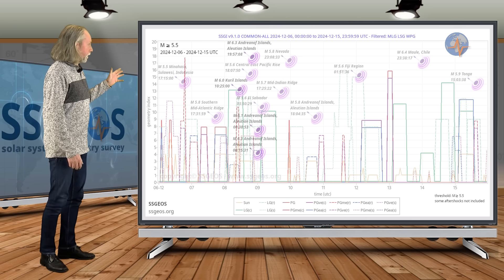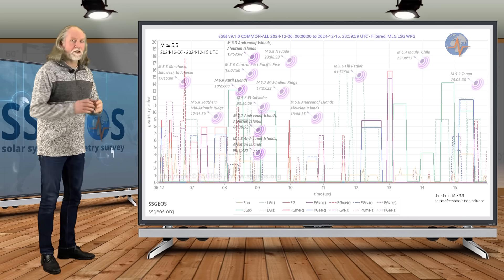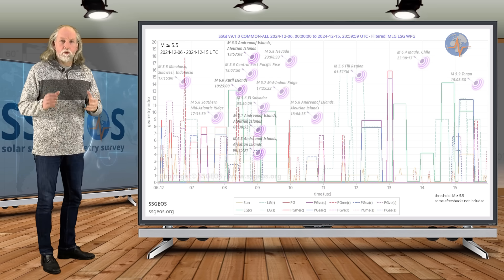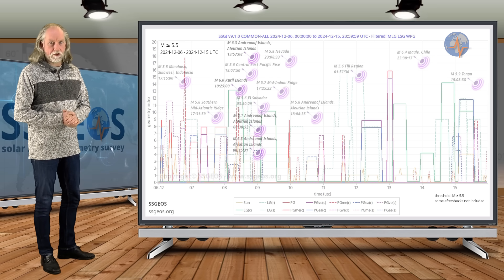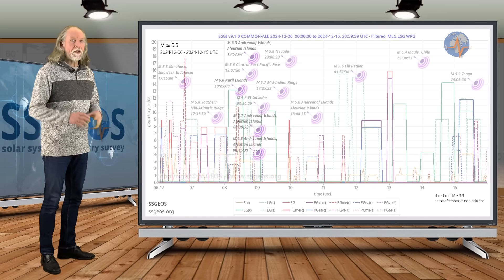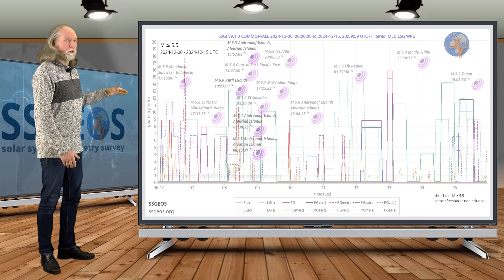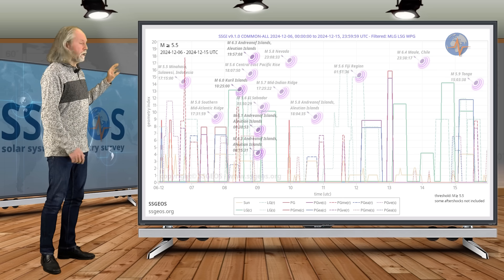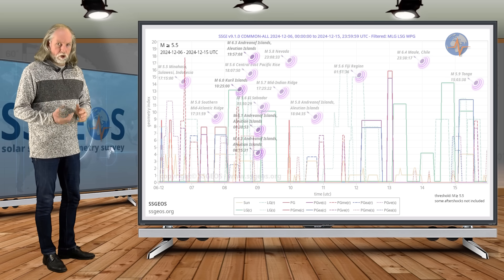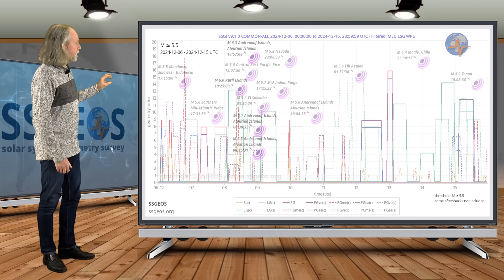In particular, we see activity into the 6 magnitude range. This is the typical temporal clustering that I refer to so often that follows convergence of critical geometry in the solar system. This is a perfect example. We had, of course, magnitude 7 in California on the 5th—that was before this convergence—but here we see this obvious seismic response to the critical planetary geometry that we had on December 6 and 7.